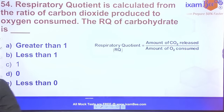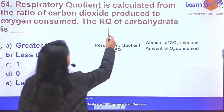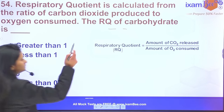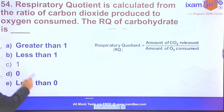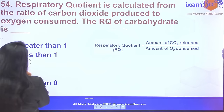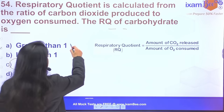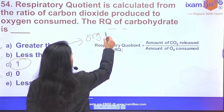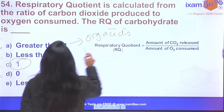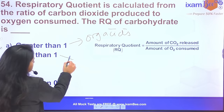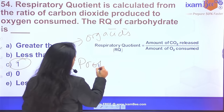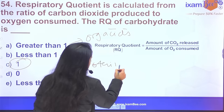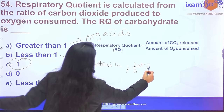Question 54: Respiratory quotient (RQ) of carbohydrates is always 1. RQ is more than 1 for organic acids, and less than 1 for proteins and fats.